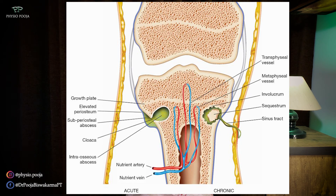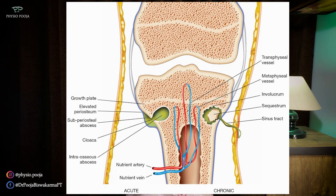In some joints, the metaphysis is intra-articular, so infection can spread from the metaphysis to the joint, causing pyogenic arthritis. The host cells harbor the infection, leading to bone destruction and production of pus and inflammatory exudate. The pus travels along the medullary cavity, causing toxic thrombosis of blood vessels. It then travels through the bony cortex, forming a subperiosteal abscess, lifting the periosteum off the bone and damaging periosteal blood supply. These dead bones are called sequestrum, and due to elevation of the periosteum, new bone called involucrum is formed.